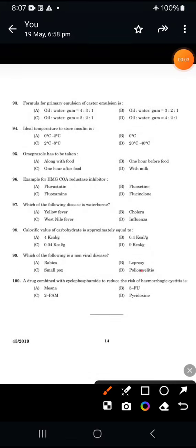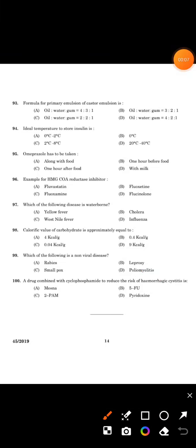Welcome to Pharma PC exam. We are discussing some questions. The first question is: formula for primary emulsion of castor oil is? Castor oil is a fixed oil, so the answer is 4:2:1, that is oil to water to gum, which equals 4:2:1. Option D is the correct answer.